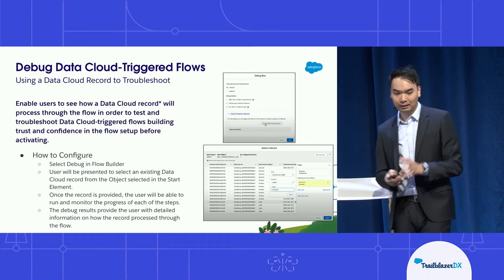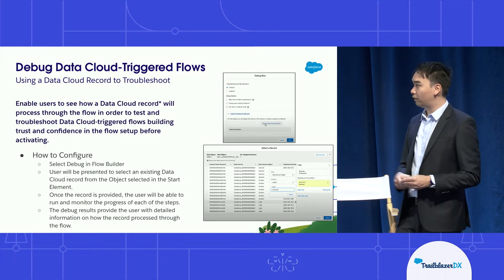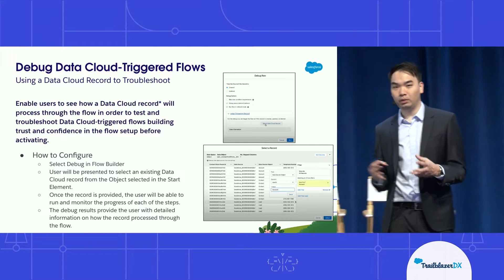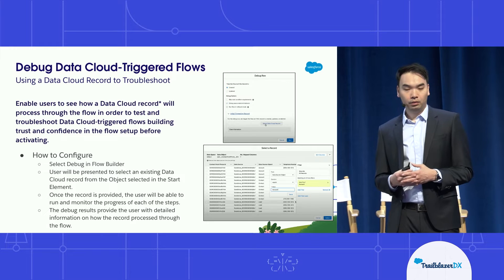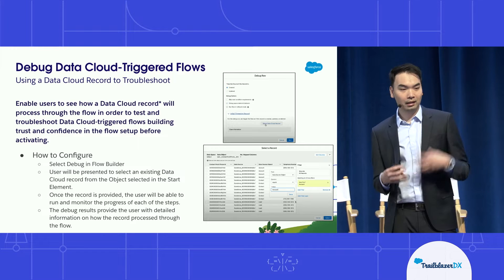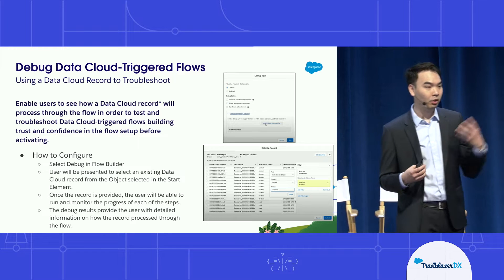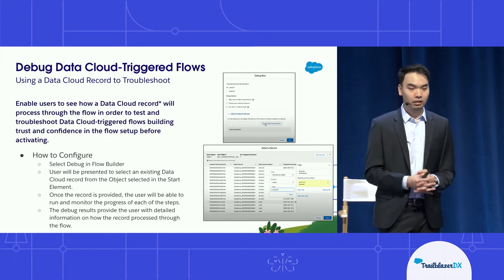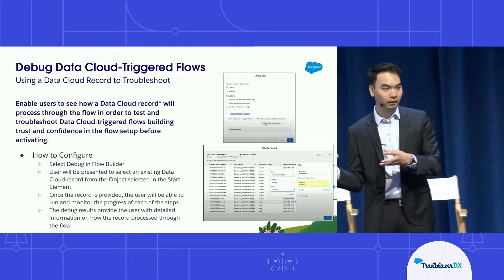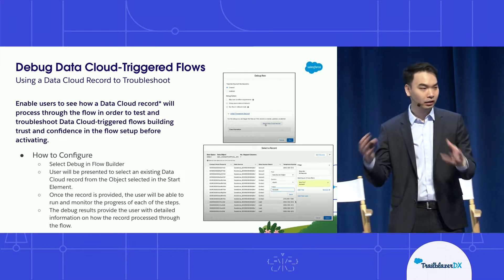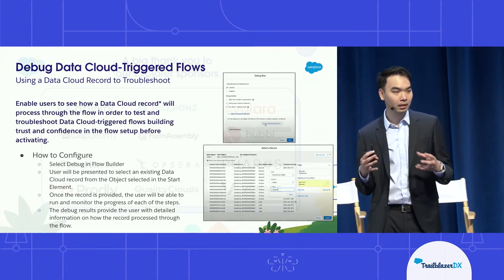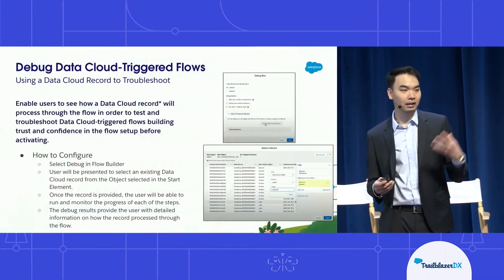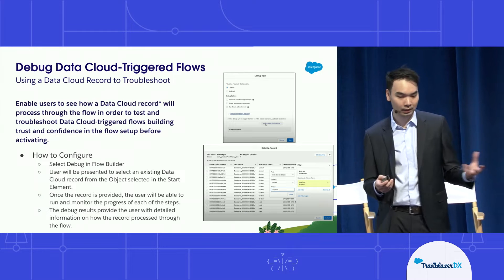So back to the slides. As I mentioned, we released Data Cloud trigger flow in the previous release. That means within flow, you can create a record trigger flow, just like you do today, except you're triggering it based on Data Cloud records.